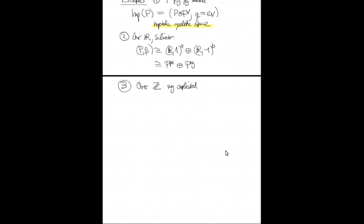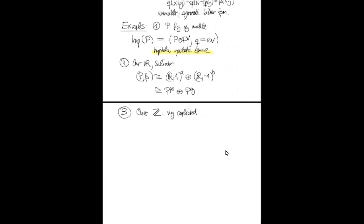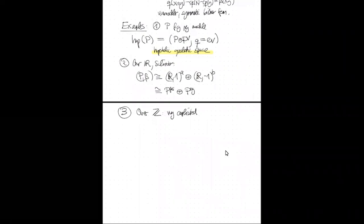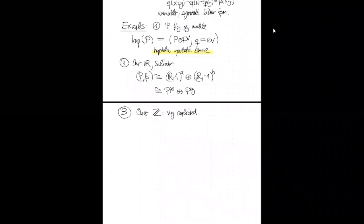These forms can be completely classified in dimension up to 25. Above that, things get completely out of control. The Minkowski-Siegel mass formula tells us the number of isomorphism classes grows enormously: in dimension 32, there are already something like 10^16 isomorphism classes of such forms.